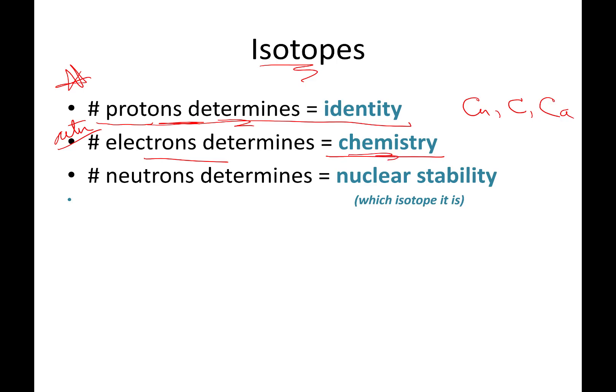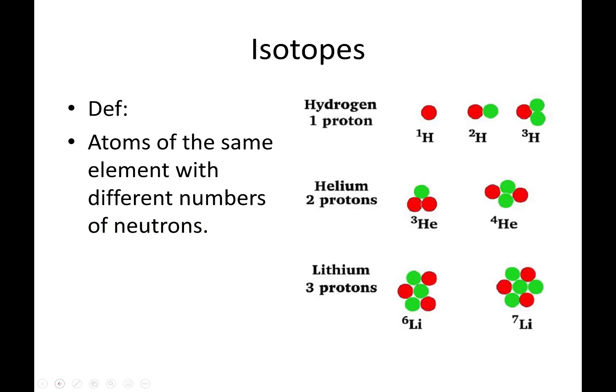But what determines isotopes is the number of neutrons — those non-charged particles buried inside the nucleus called neutrons. They affect nuclear stability. Make sure you write this down; it's a big, important concept.